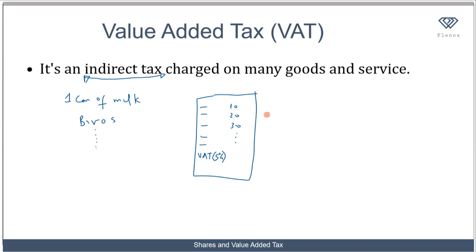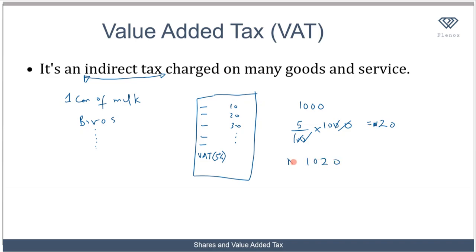What this means is that on the sum of all the products you bought, you are going to pay five percent of it to the government. So if the sum of all the products you bought is 1,000 naira and the VAT is five percent, you pay five percent of 1,000 — that is five over one hundred times one thousand — which equals 50 naira. So you pay 1,050 naira instead of 1,000 naira, with the 50 naira being the value added tax going to the government.